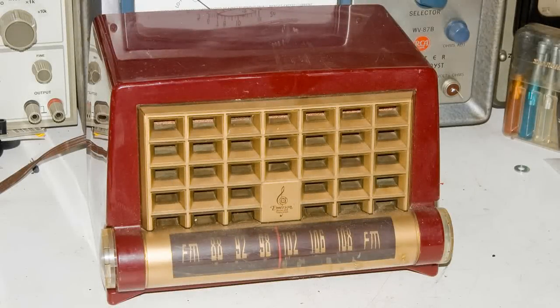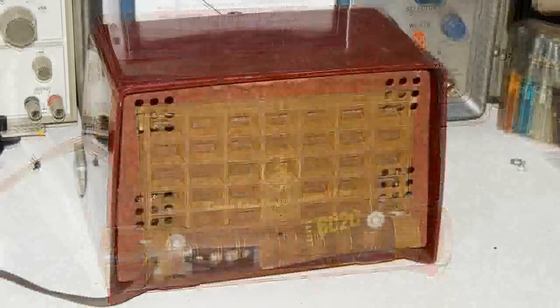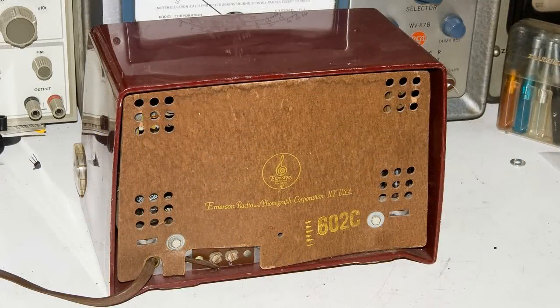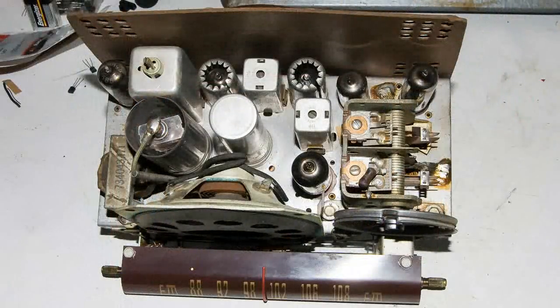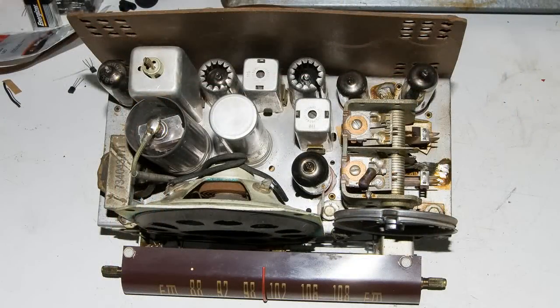This looks like it could be an AA5 radio, but it is an FM radio only. Here is the back side of it, and you can see the model number is 602C. I've taken it out of the cabinet. We're going to do some tracing with a scope on this FM radio.